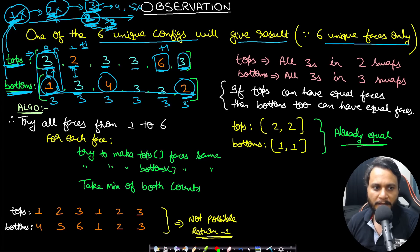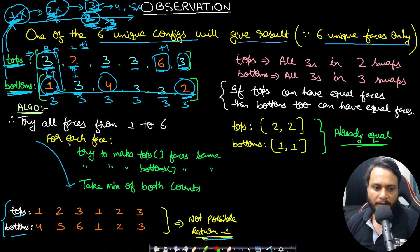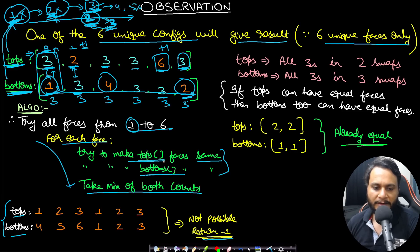If we are not able to make all faces the same for either tops or bottoms for any face value, we return minus one. The algorithm tries all face values from one to six. For each face, we attempt to make all tops equal to it and count swaps. If tops can be made equal (count is not infinity), we also try bottoms and take the minimum of both counts. We track the overall minimum across all six faces.